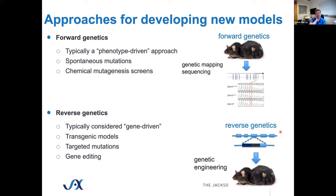The older way — fancy mice had phenotypic characteristics that were interesting to people who kept mice. This phenotype-driven approach was the standard approach for identifying novel mutations relevant to human disease for many years, including both spontaneous mutations and chemical mutagenesis screens such as ENU. This is what we refer to as forward genetics — we look for the phenotype first, then use genetic mapping and sequencing to identify the gene of interest. Reverse genetics is much more common today and is more gene-driven — it includes transgenic models, targeted mutations, and gene editing to create specific mutations of interest.